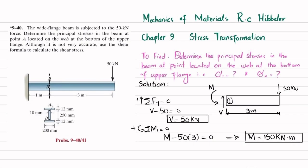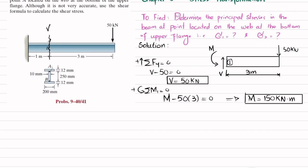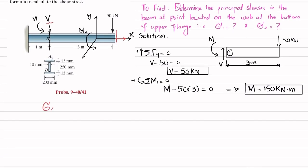We have a shear force V and a bending moment M acting on the section. The x-axis is along the beam, the y-axis is vertical, and the z-axis is out of plane. The moment is about the z-axis, which produces a bending stress in the x direction — sigma x. The shear force acts along the y direction and produces shear stress. We need to find sigma x and the shear stress at point A.